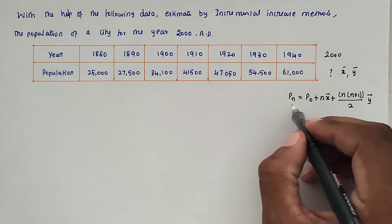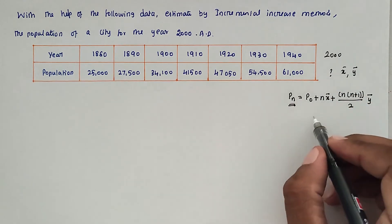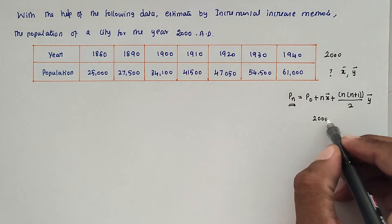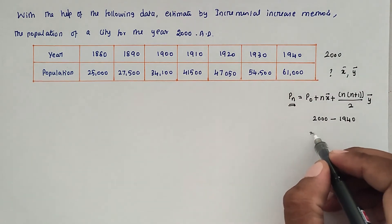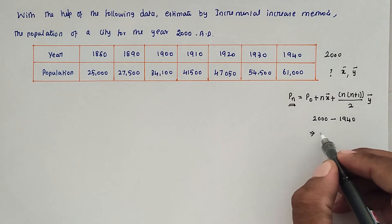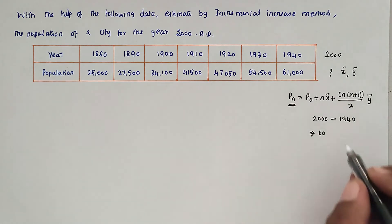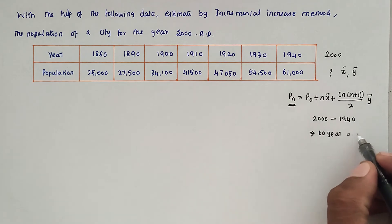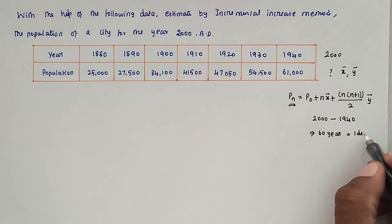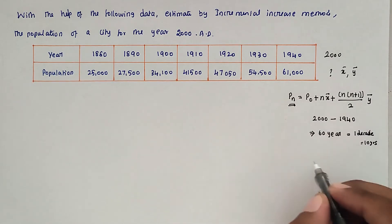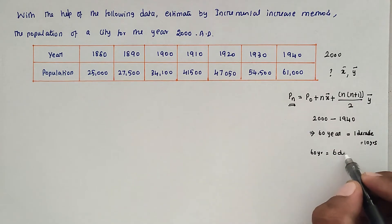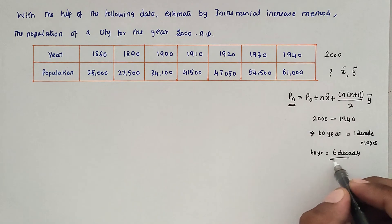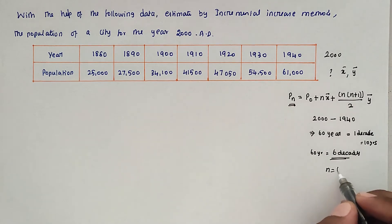Using this formula, we can find the population. The n value is calculated as 2000 minus the last known year 1940, which gives 60 years. Since one decade equals 10 years, 60 years equals 6 decades. So the n value is 6.